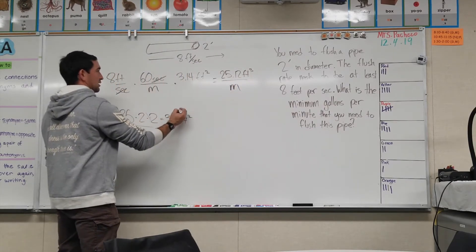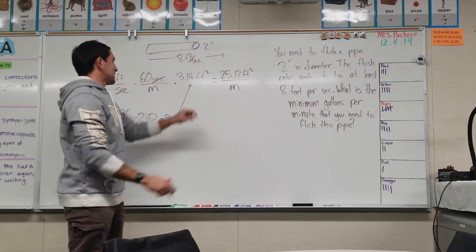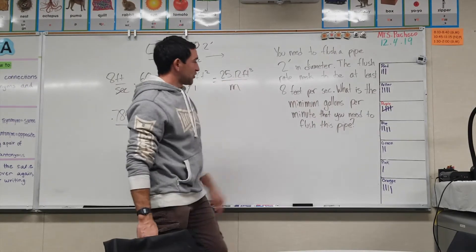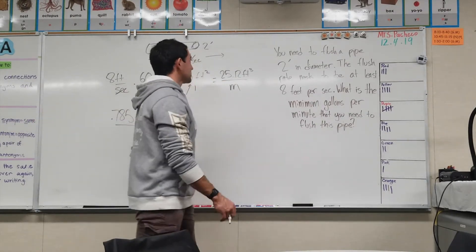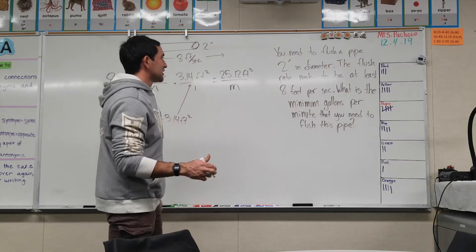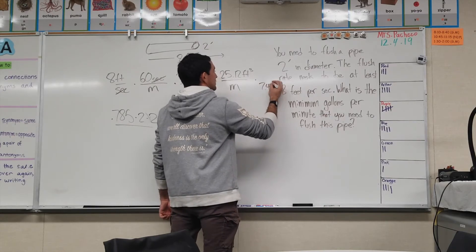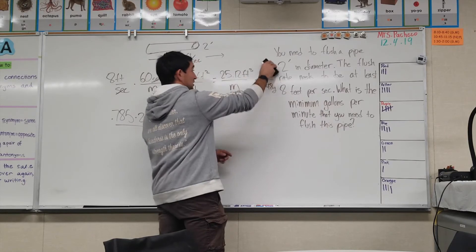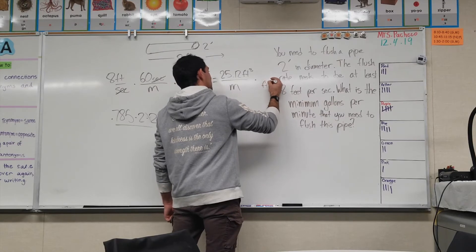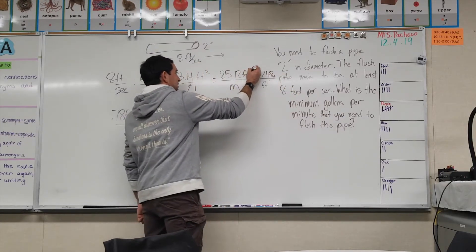Remember, that 3.14 number came from the area calculation we just did — you can put a '1' there to make it clear if you want. So we've got 25.12 cubic feet per minute and now we convert cubic feet to gallons. There are 7.48 gallons per cubic foot. Put cubic feet in the denominator to cancel them out, and 7.48 gallons in the numerator.